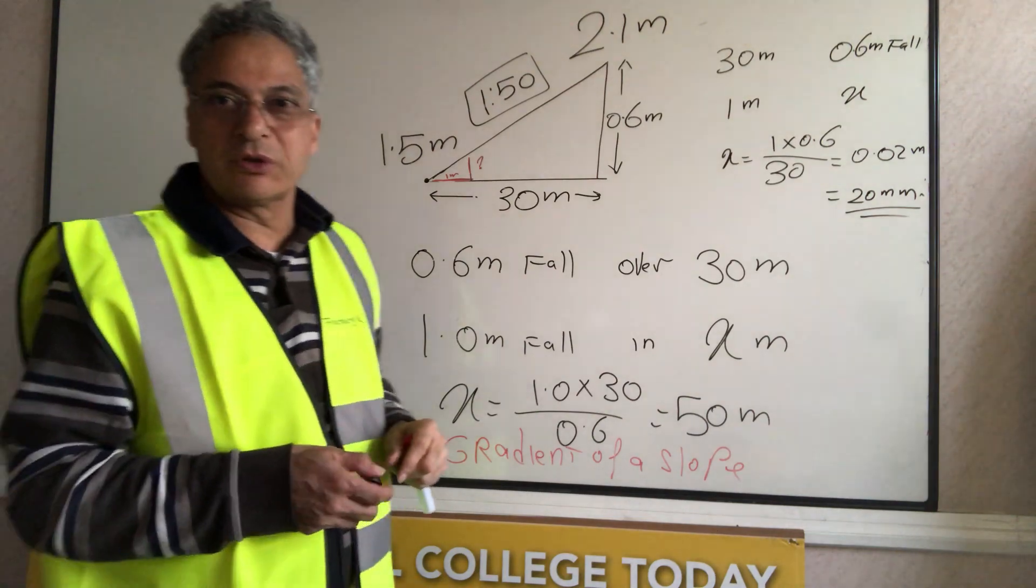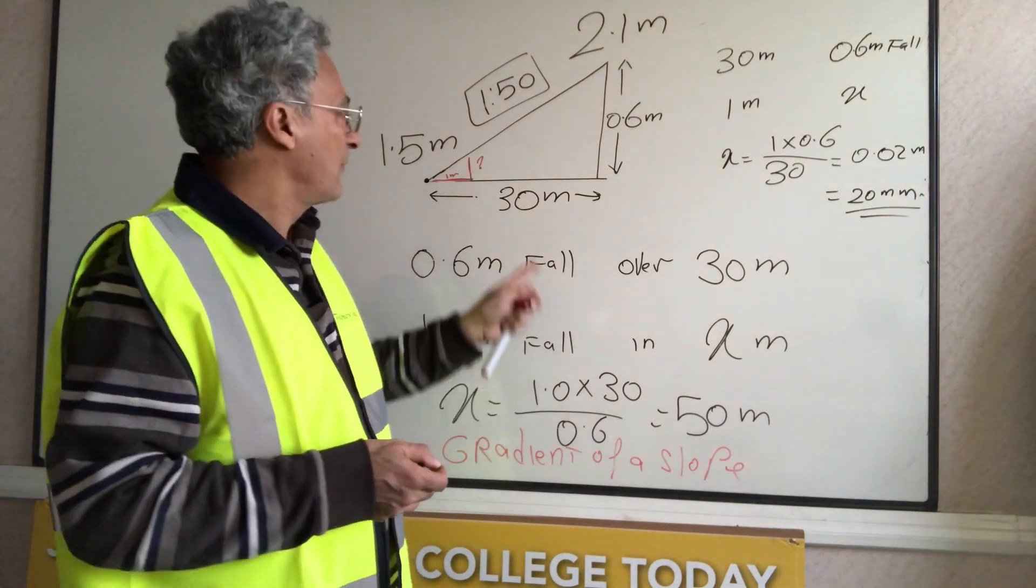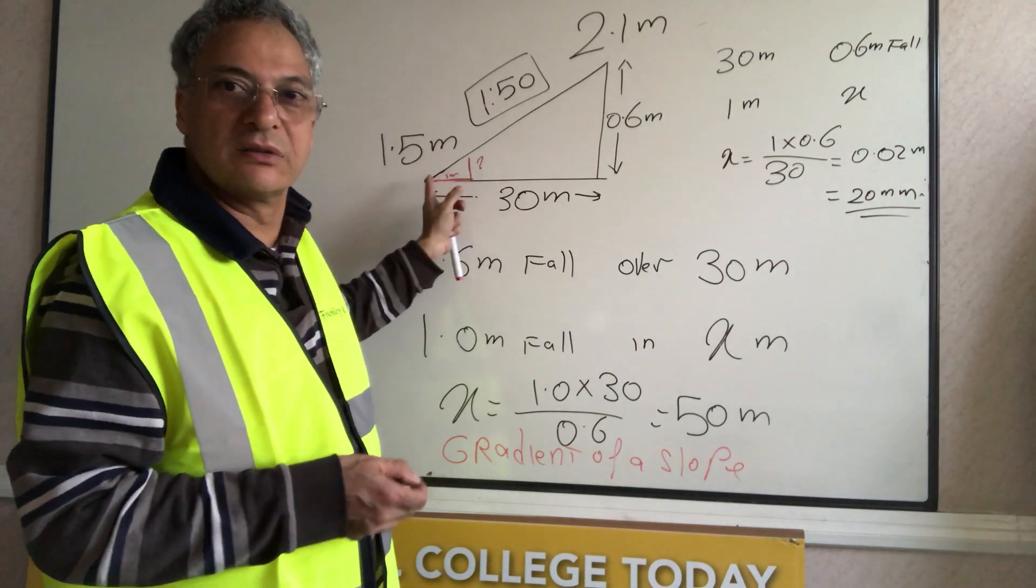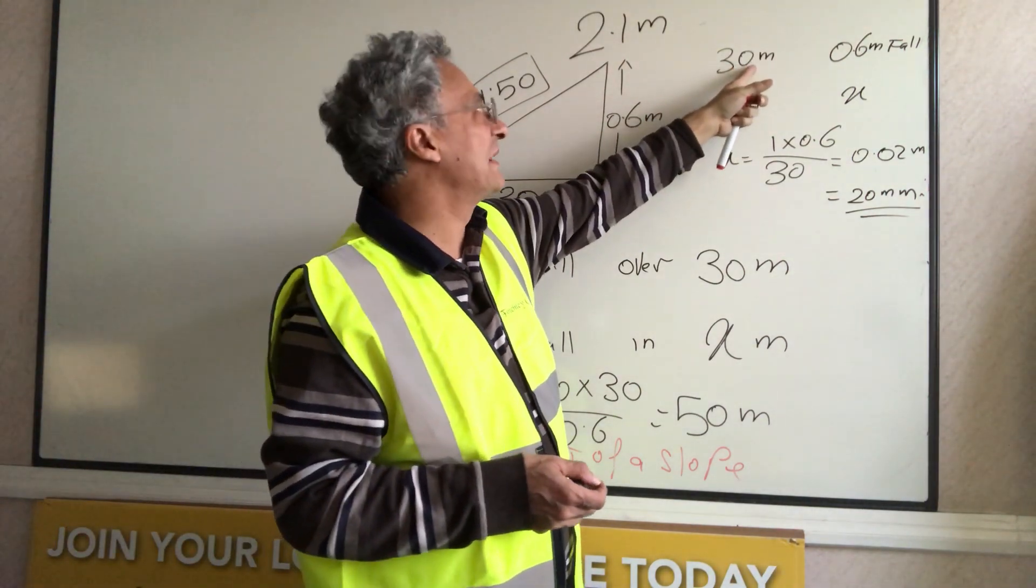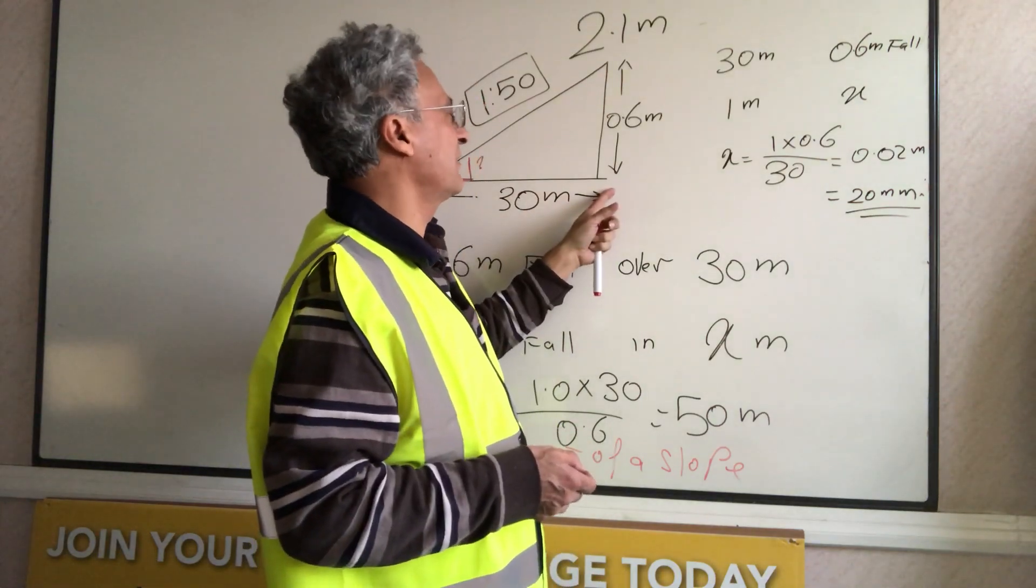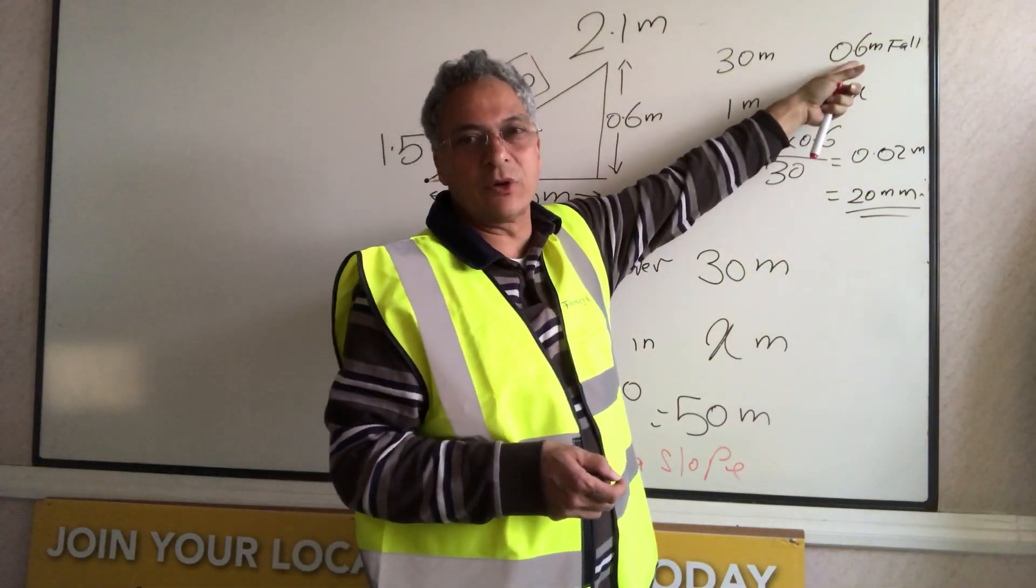If I wanted to do the opposite and calculate what is the fall per meter, I'll write 30 meters of length. I have 30 meters of length. In that length, I fall 0.6.